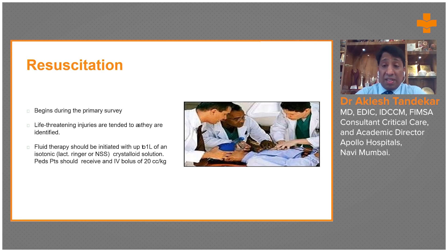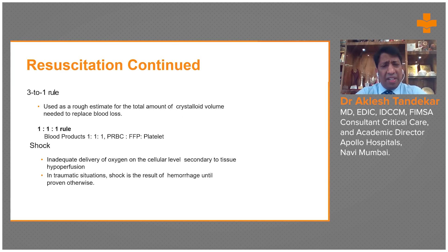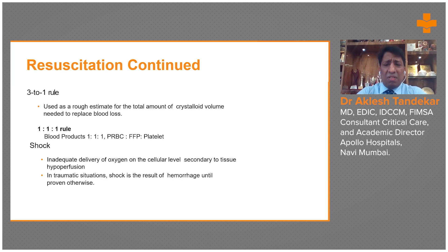ATLS guidelines target systolic blood pressure to keep organ perfusion intact. Initial resuscitation should be one liter of crystalloid, but blood should be replaced for blood. Giving more than two to three liters of fluid leads to dilution of coagulation factors, dilution of platelets, and thrombocytopenia, causing torrential bleeding. Overzealous fluid resuscitation is harmful.